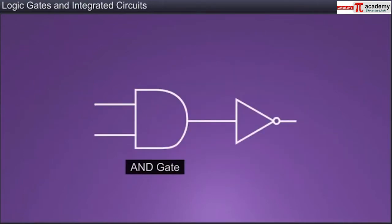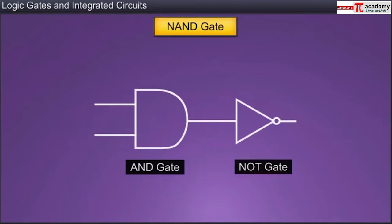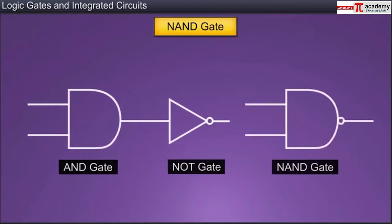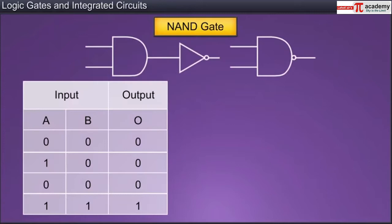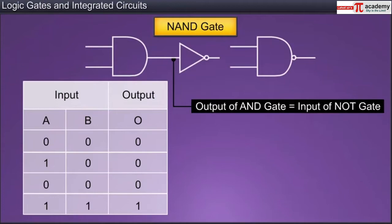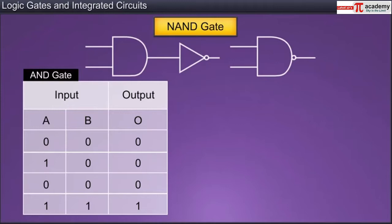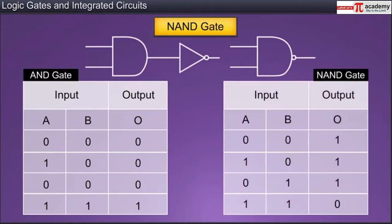An AND gate followed by a NOT gate forms a NAND gate. The symbol of a NAND gate is a combination of the symbols of the AND and NOT gates. In a NAND gate, the output of the AND gate acts as the input for the NOT gate. The output of the AND gate is inverted by the NOT gate and appears as the output of the NAND gate. Hence, if inputs A and B are both one, the output of the NAND gate is not one.